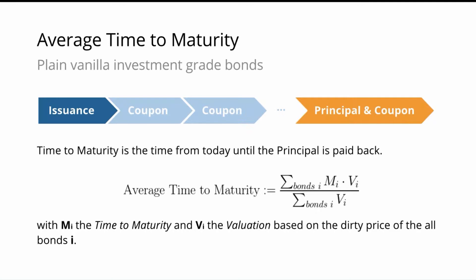The average time to maturity is calculated using, as you see in this formula, the time to maturity of each bond multiplied by the actual valuation. With bonds, very importantly, you take the dirty price valuation, which means that accrued interest is also accounted for. Then you divide it by the sum of all valuations, and by this you get the arithmetic average time to maturity.